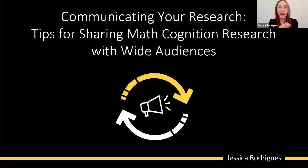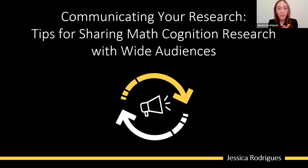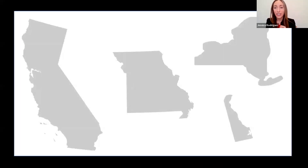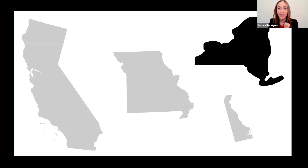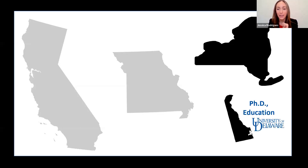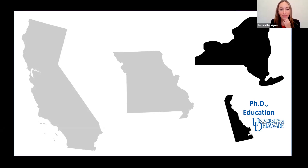I was asked to share about communicating research — tips for sharing math cognition research with wide audiences. To share just a bit about me: I grew up in New York, did undergrad and my master's degree there, stayed on the East Coast for my PhD at the University of Delaware with my advisor Dr. Nancy Jordan. And then I did a two-year postdoc.